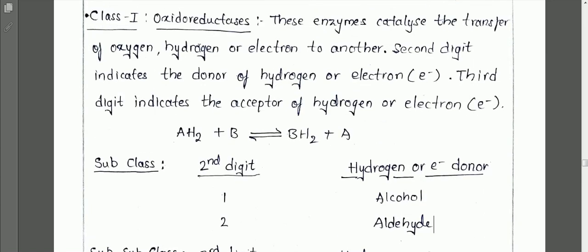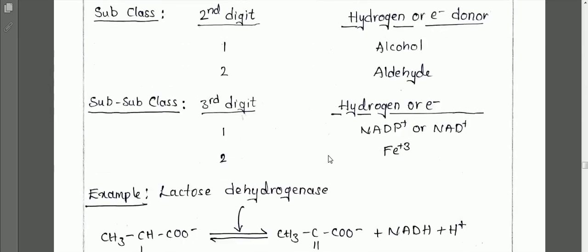In oxidoreductase reactions, transfer of a component — whether oxygen, hydrogen, or another electron — gets transferred from component A to component B. For example, person A has one hydrogen molecule and this hydrogen is given to person B in oxidation-reduction reactions.